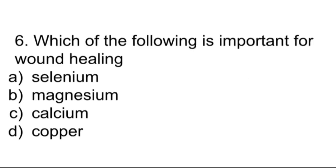Which of the following is important for wound healing? Selenium, magnesium, calcium, or copper. Using the elimination process: selenium can be eliminated. Magnesium, calcium, and copper are all important for wound healing. Among those three, the best answer is copper — it is more important than magnesium and calcium in this context. Note: if zinc were an option, zinc would be the best answer, but since it is not listed, copper is the answer.